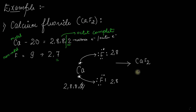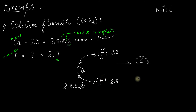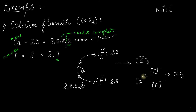Calcium has lost 2 electrons, so a plus two charge comes on calcium — Ca²⁺. Each fluorine has accepted one electron, so a minus one charge comes on each fluorine — F⁻. So the formula we write is Ca²⁺ and two F⁻, which together gives us CaF2. The more electrons that are lost, the higher the positive charge on the metal.